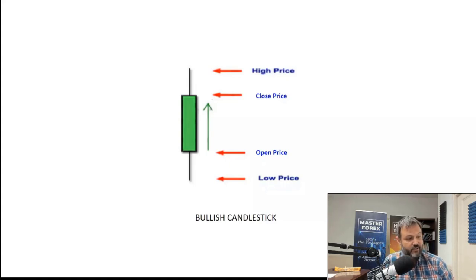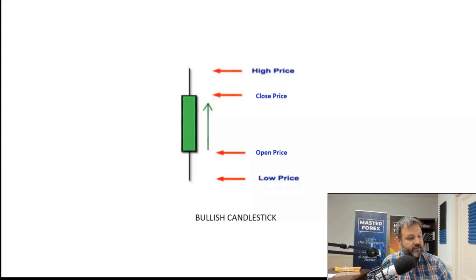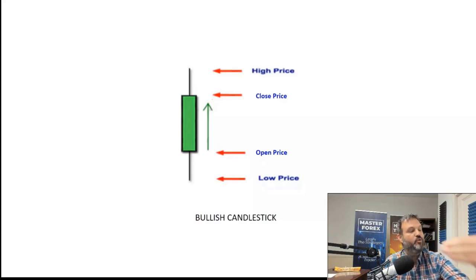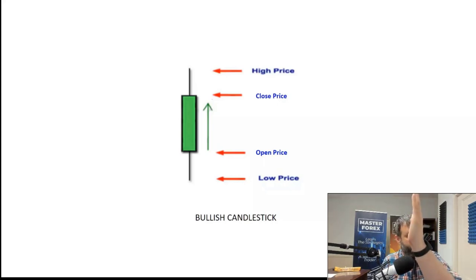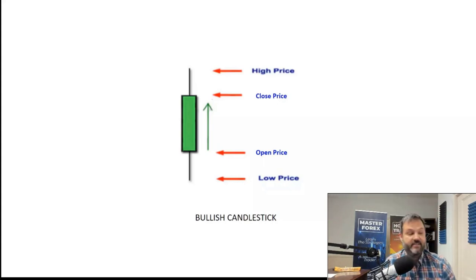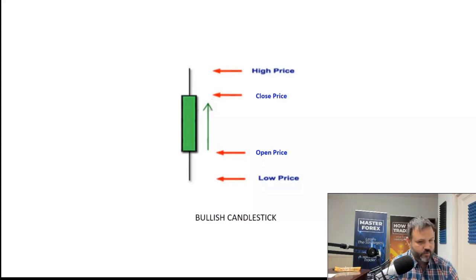A little advanced note: if you're looking at a one-hour pattern and you see the pattern forming on a one hour and also on a daily, the two patterns working together is really powerful. For example, if you see a daily bullish breakout candle and a one-hour bullish breakout candle happening at the same time — that's the kind of trades we want to find.